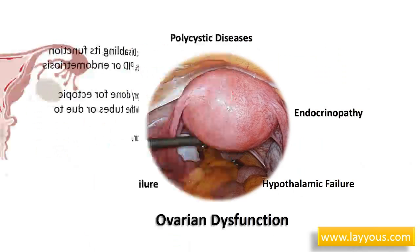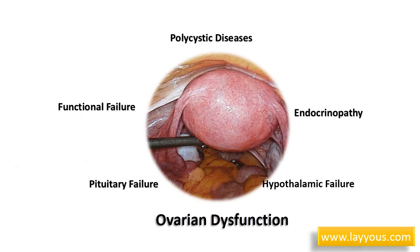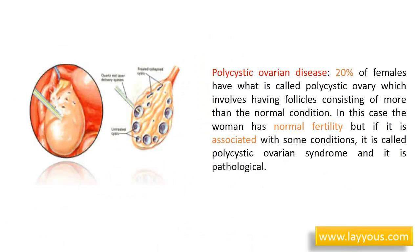Ovarian dysfunctions are five in number: polycystic ovarian disease, functional failure, hypothalamic failure, pituitary failure, and endocrinopathy. Regarding polycystic ovarian disease, 20% of females have polycystic ovaries, involving more follicles than the normal condition. In this case the woman has normal fertility, but if associated with certain conditions, it is called polycystic ovarian syndrome, which is pathological.